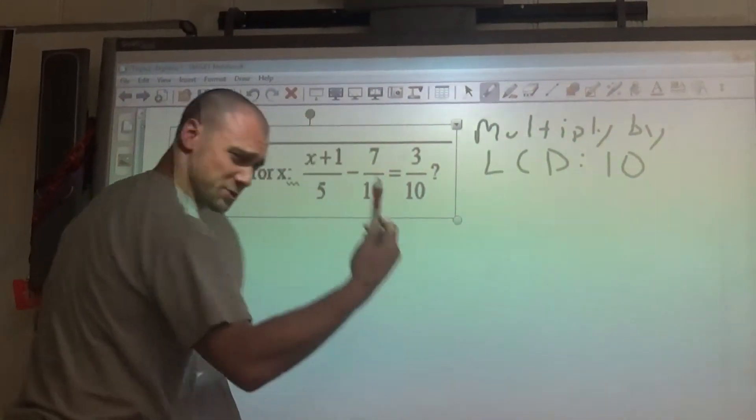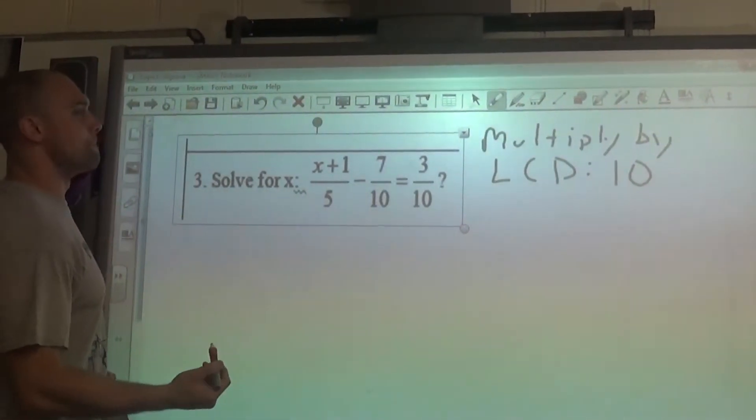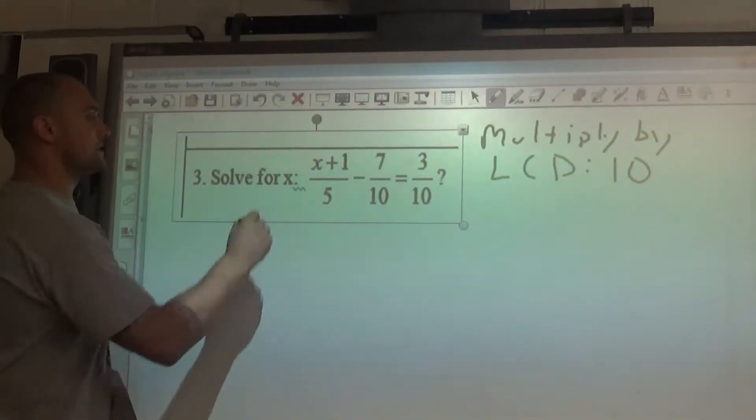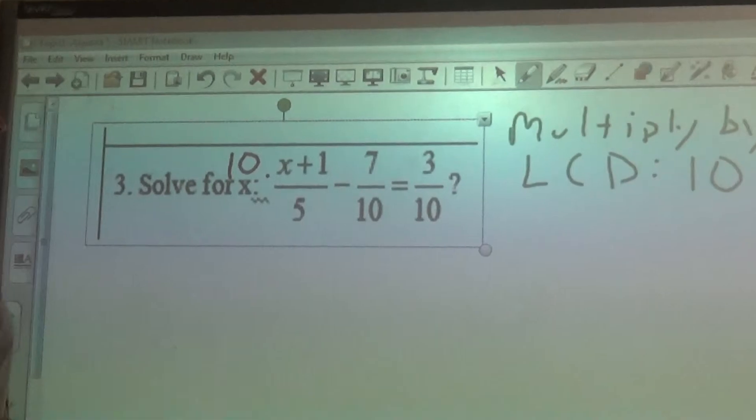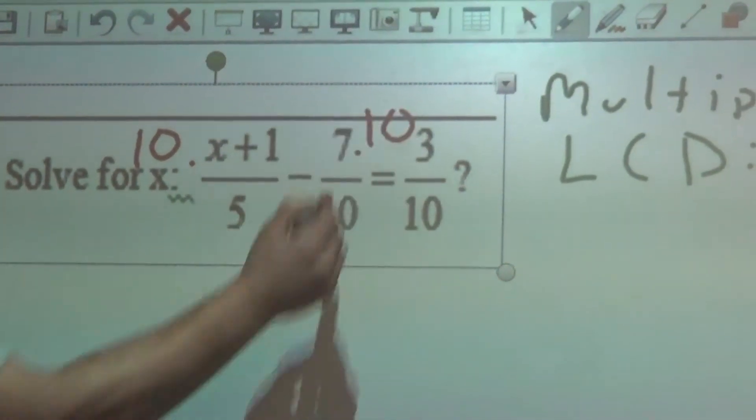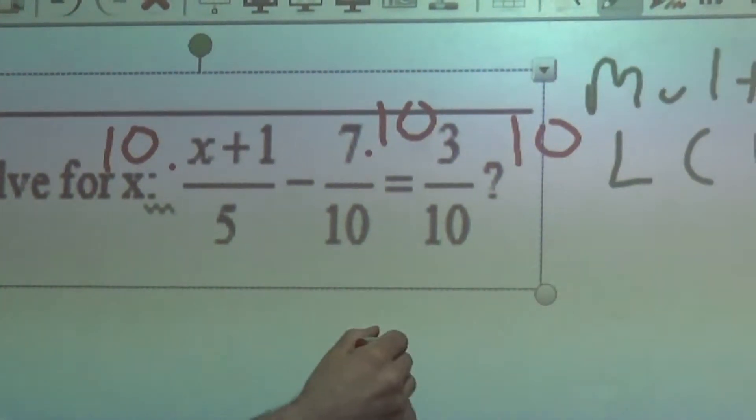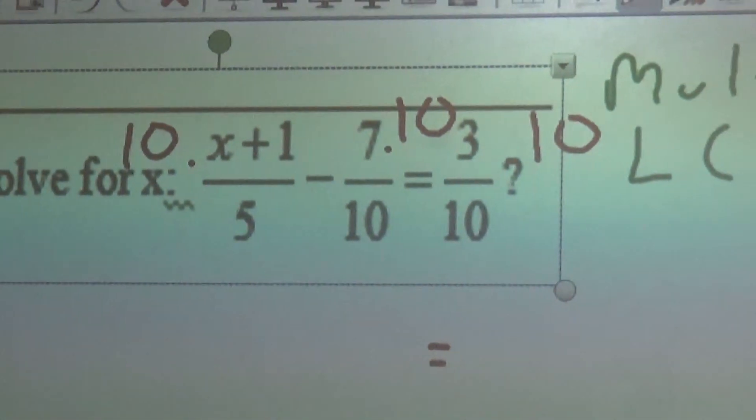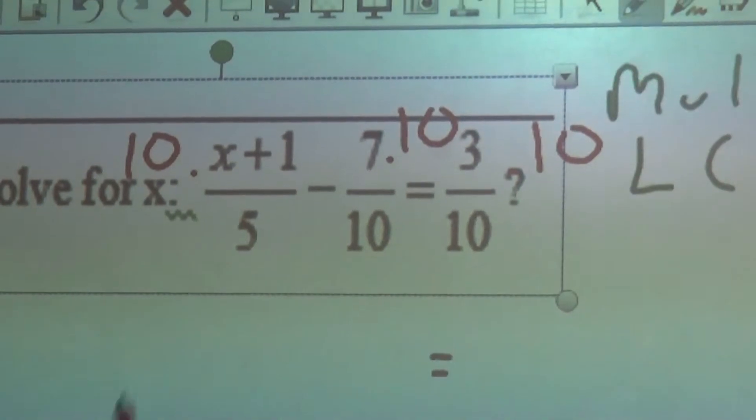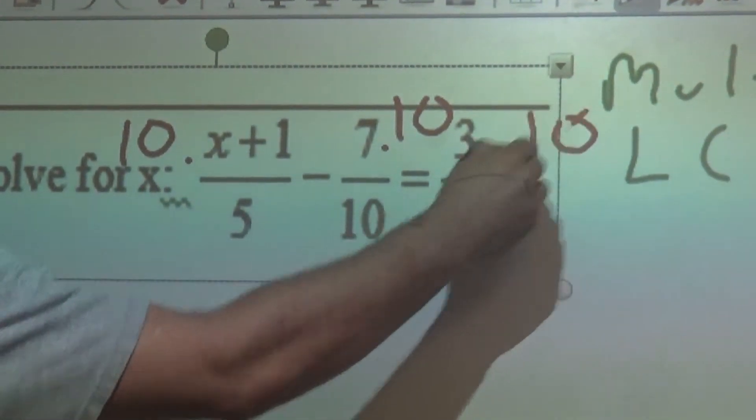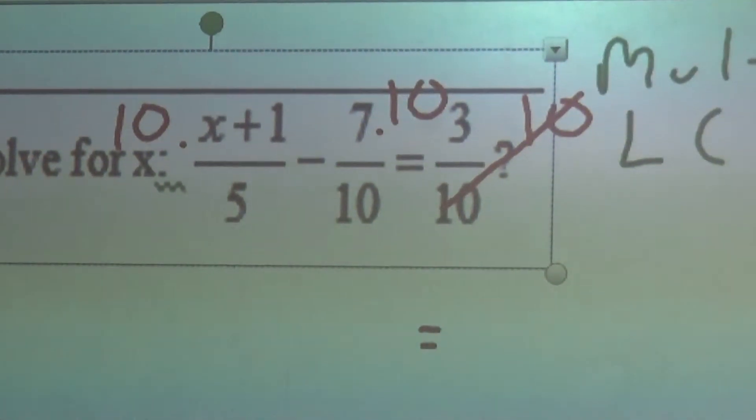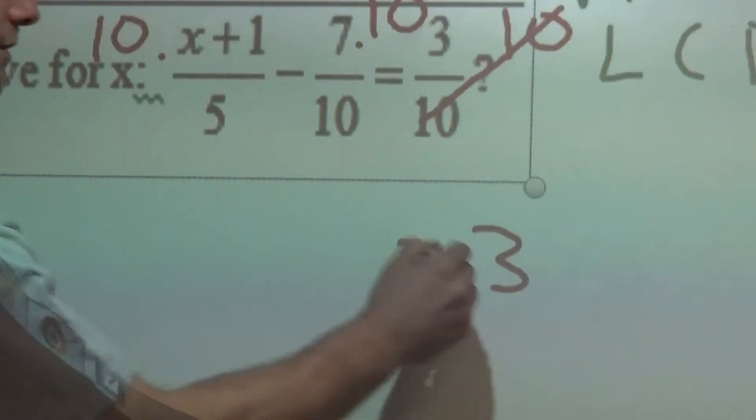So let's switch to red here. We're going to multiply everything by 10. So by 10, by 10, by 10. Again, the whole point of this is to clear the fractions. So on the right side of the equal sign, the 10 on top cancels the 10 on the bottom, leaving me with equals 3.